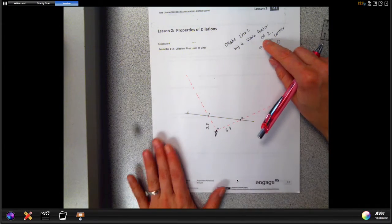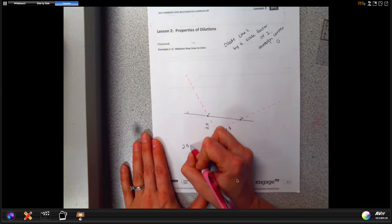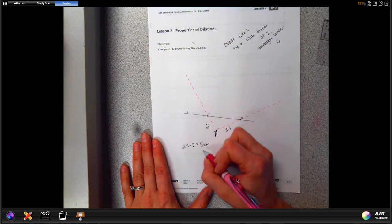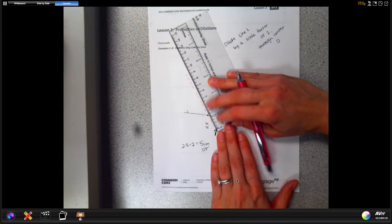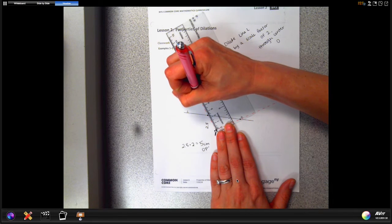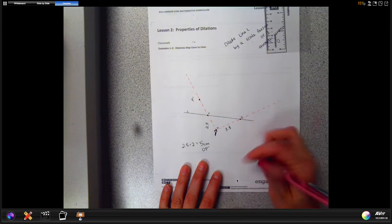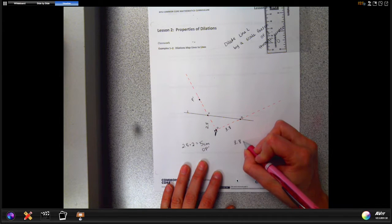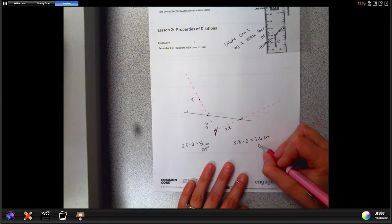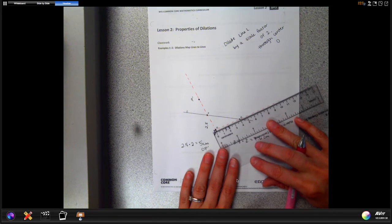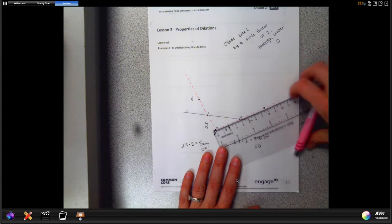Now to dilate it by a scale factor of 2 that means we're gonna multiply these distances by 2. So for OP, 2.5 times 2 is 5 centimeters for OP prime. And 3.8 times 2 is gonna give us 7.6 centimeters for OQ prime. So you'll start at O with your ruler at 0 and we're gonna measure out 5 centimeters on our dotted line and we're gonna make a new dot and label that P prime. And then we'll measure out 7.6 centimeters on our dotted line and make a new point, that's Q prime.